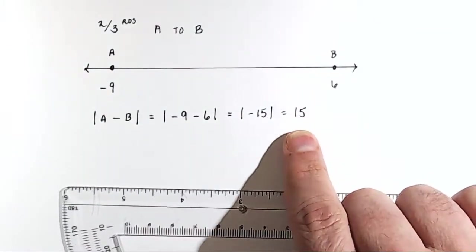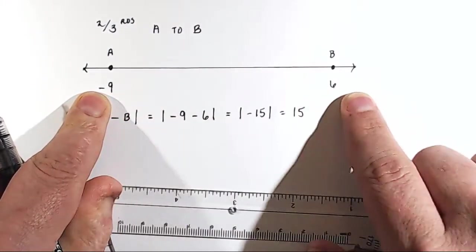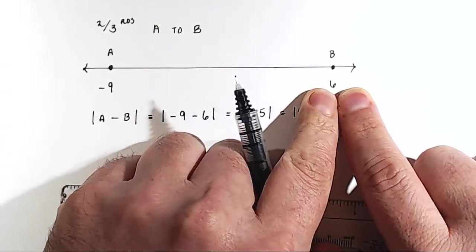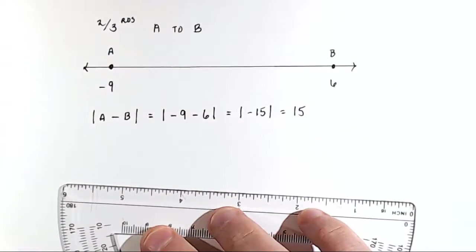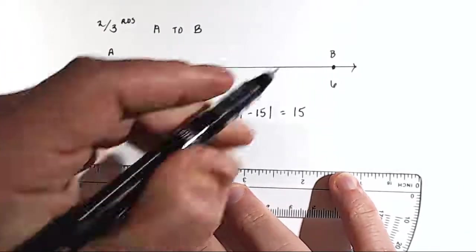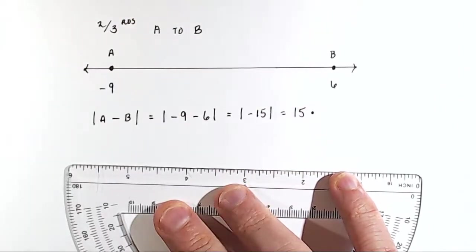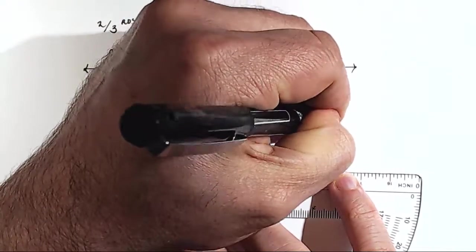So we have found the total distance between this point on the number line, negative 9, and this point on the number line, 6. And now we want to know what is 2 thirds of that distance. Well, so we just multiply 15 by 2 thirds.